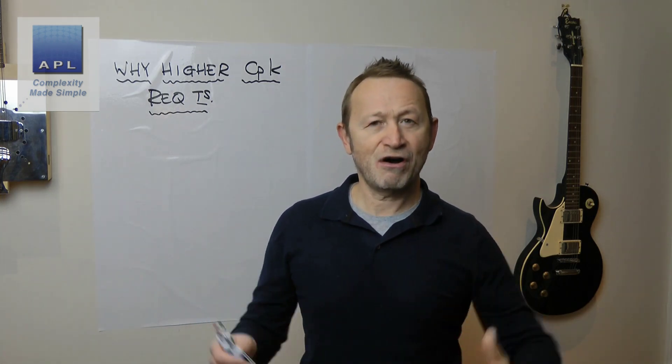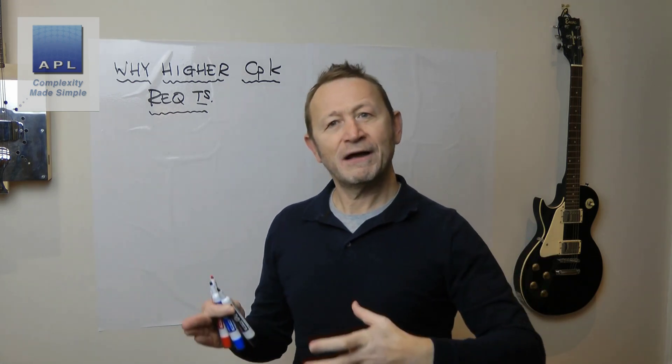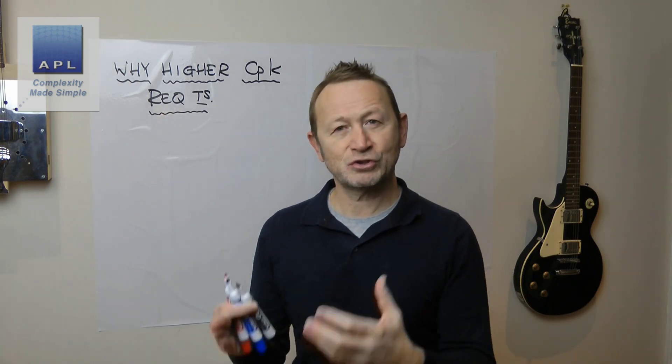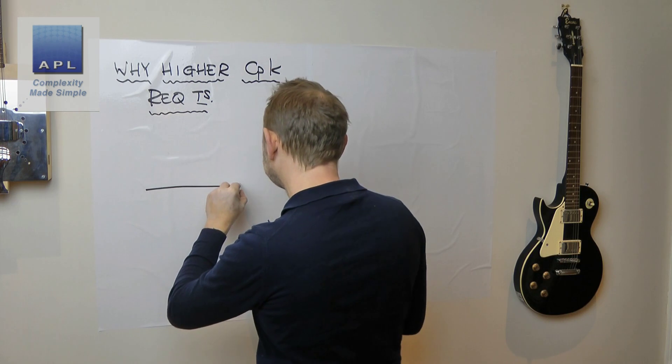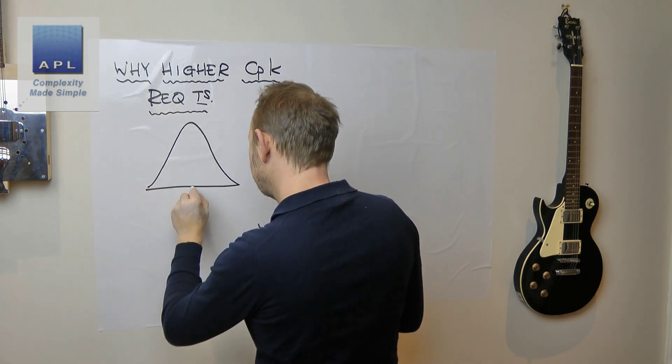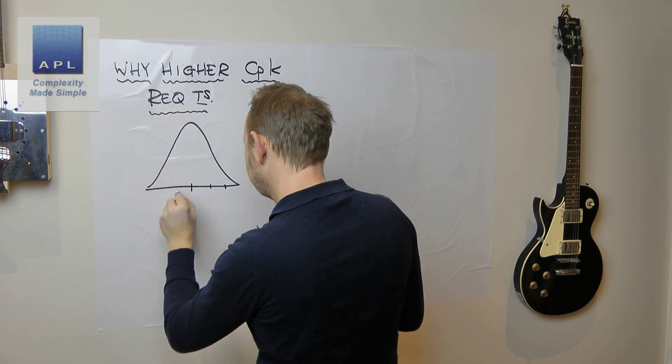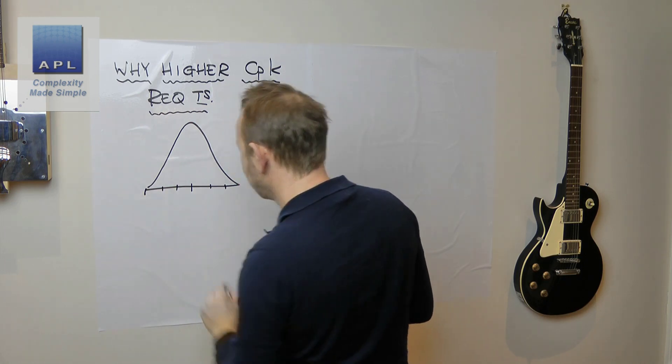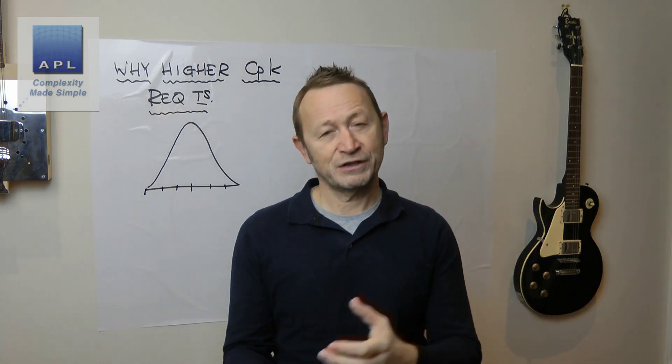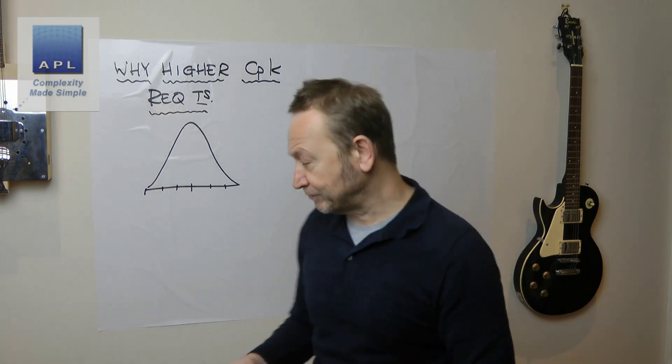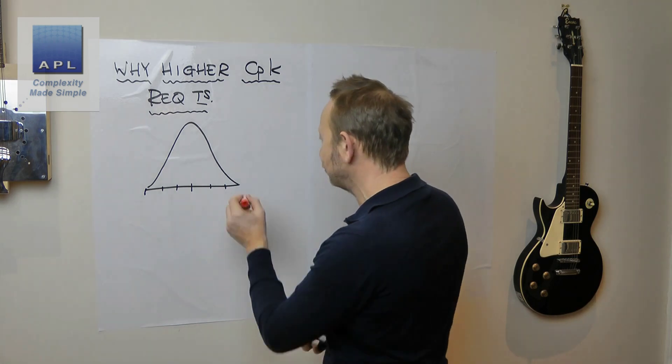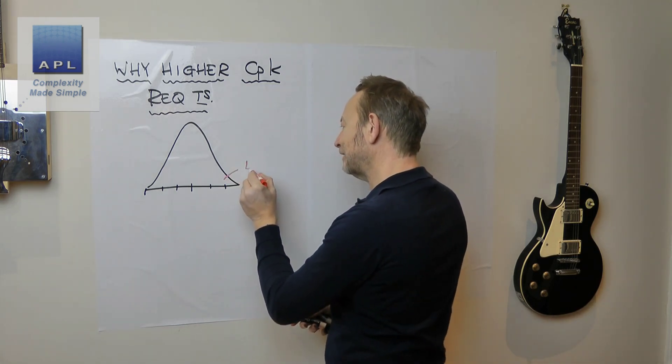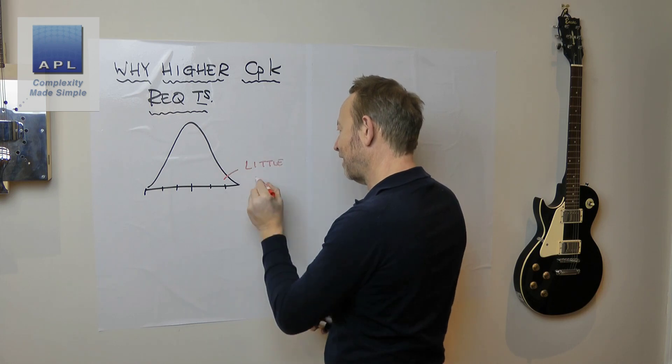This goes to the heart of the normal distribution and the ability of your statistical tools to see movement in your processes. Let's sketch the normal distribution - we've got the normal distribution, which is always said to be three standard deviations in one direction, three standard deviations in the other direction. Because of the nature of it, there's very little data out at the tails.